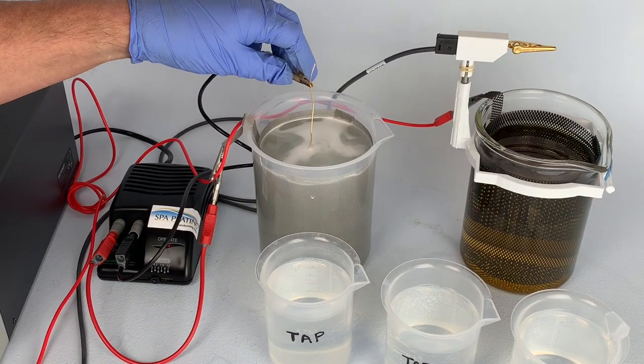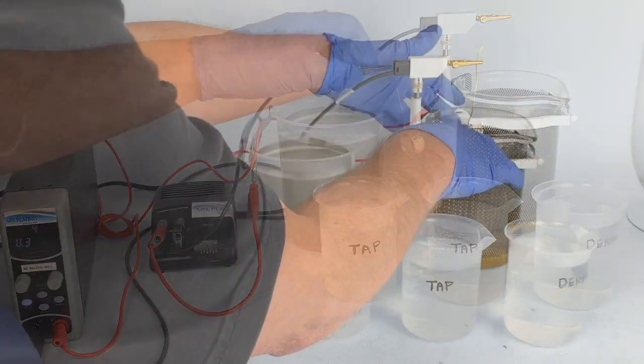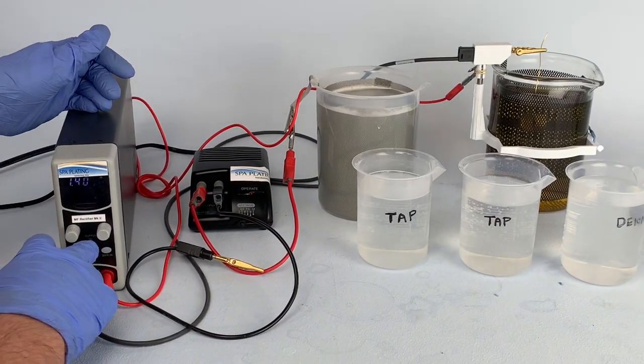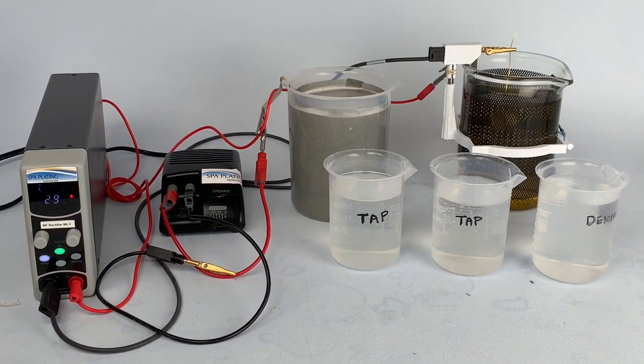To start, give your work a power clean in our cleaner and pass the work through the three rinse baths. Fix the work in the black rhodium tank plating solution using the jig holder and turn on the MF rectifier.